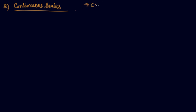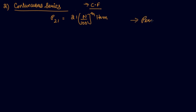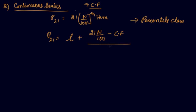In continuous series, first form the cumulative frequency of the series. For example, to find P21, calculate 21 divided by 100 into N to locate the item in the cumulative frequency. Then apply the formula: lower limit of the percentile class plus (21N/100 minus cumulative frequency of the preceding class) divided by frequency of the percentile class, multiplied by the class size.